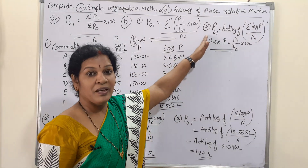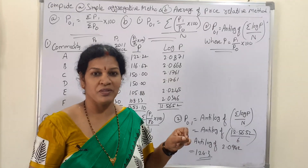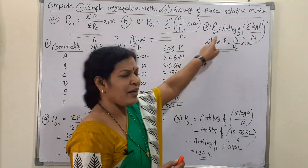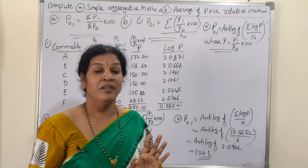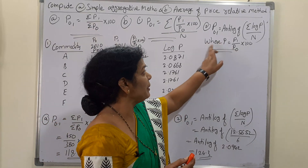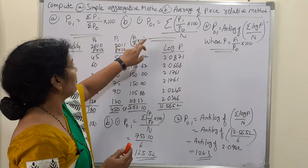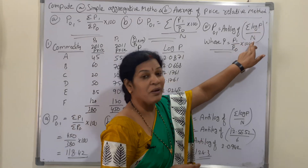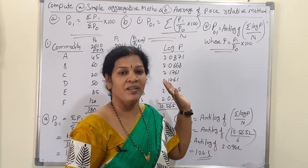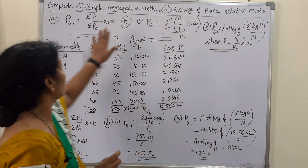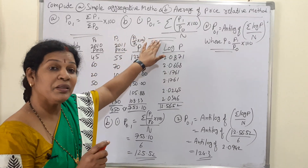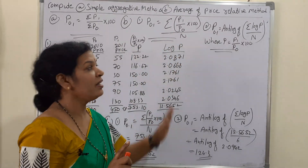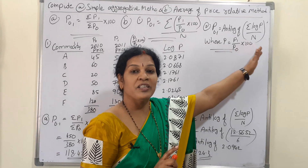The second method uses logarithms. The formula is: P₀.₁ = antilog of (Σ log P / n), where log P means the logarithm of (P₁/P₀ × 100). So the same price relative (P₁/P₀ × 100) is used, but we take its logarithm, sum them, divide by n, and then take the antilog.